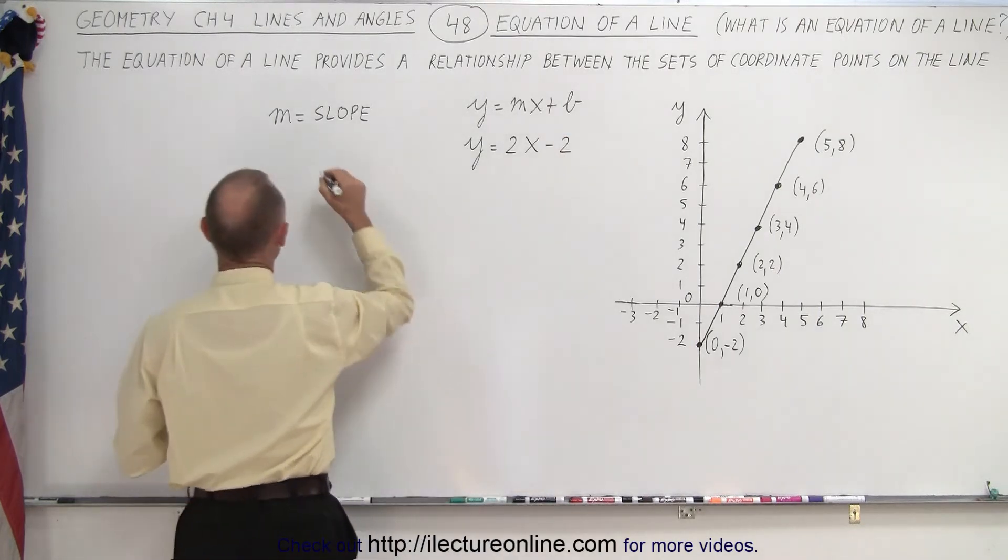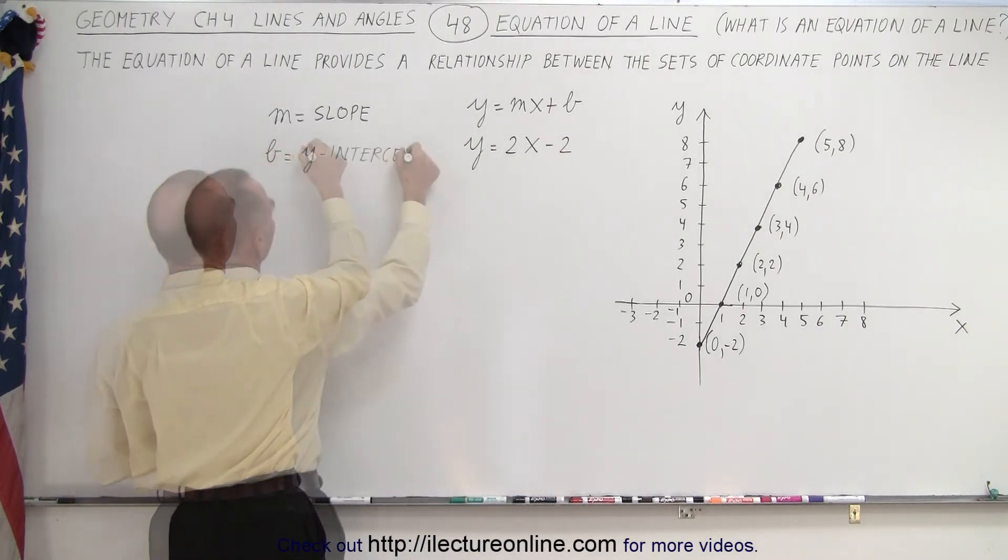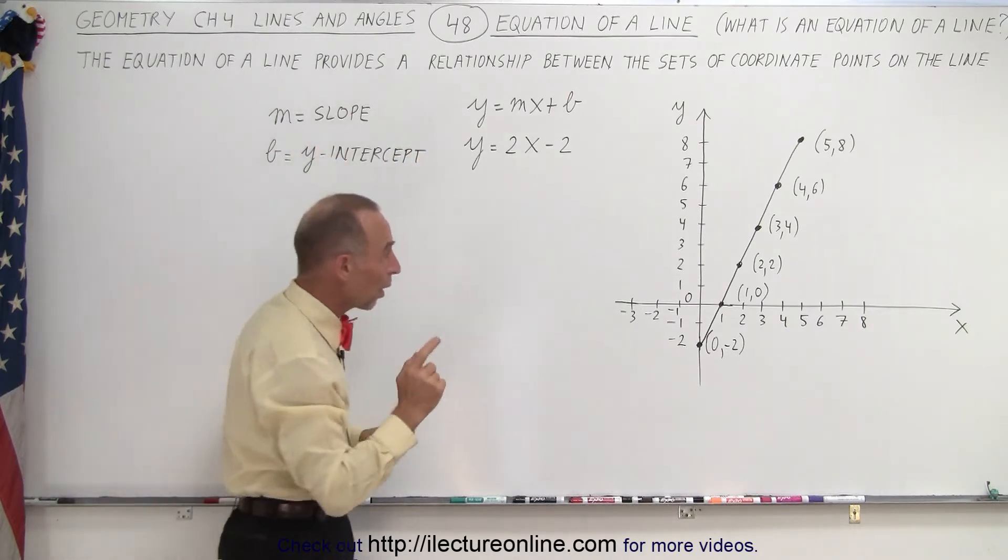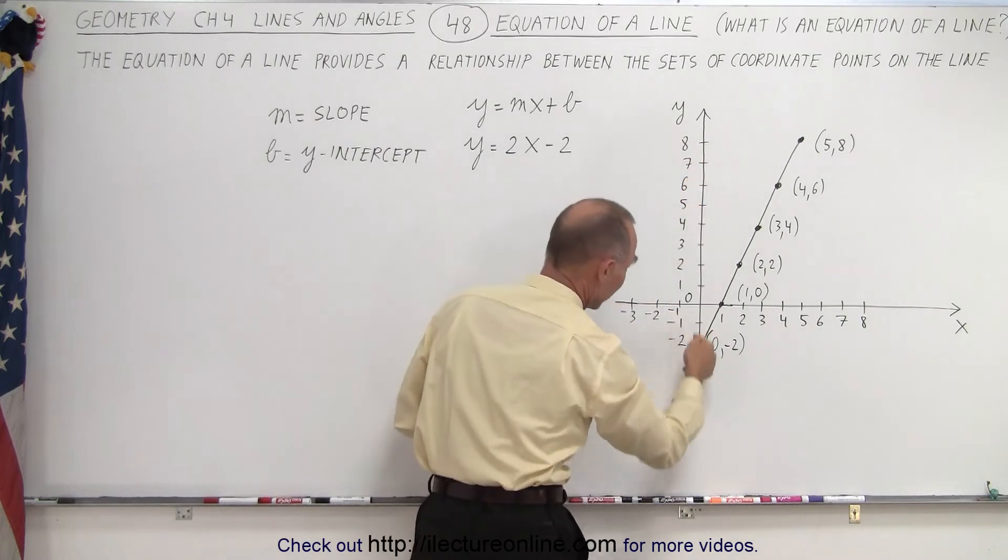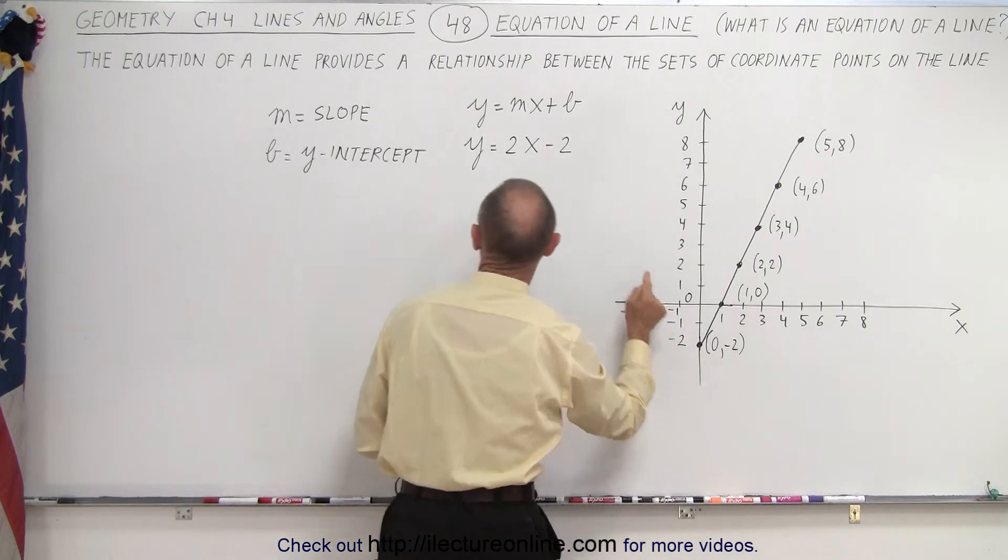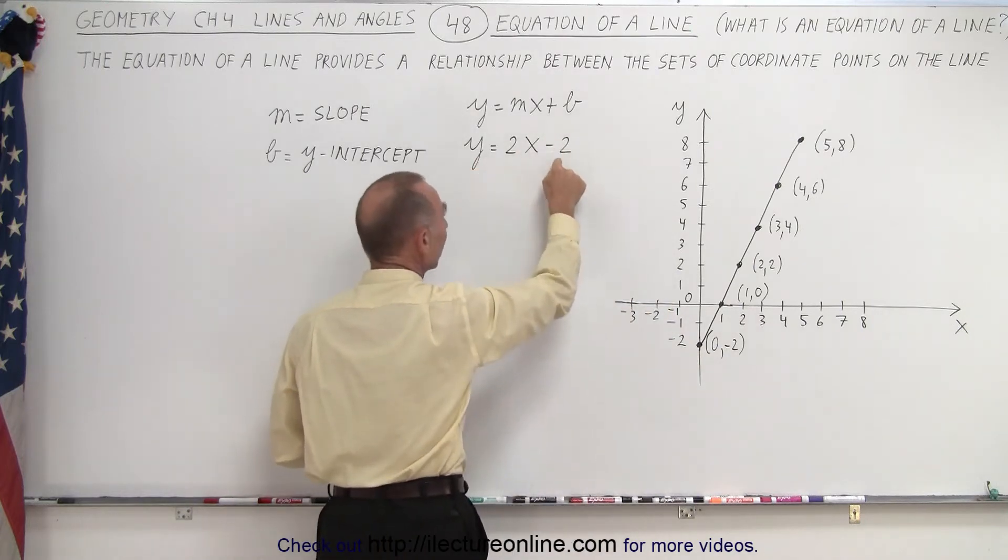b here is what we call the y-intercept. The y-intercept is the point where the line crosses the y-axis. So we can see that here's the y-axis and the line crosses the y-axis when y equals negative 2. So here we see b is negative 2.